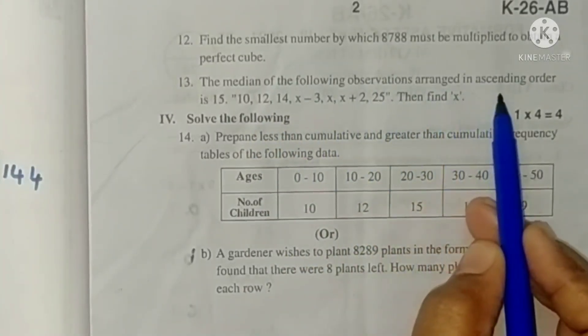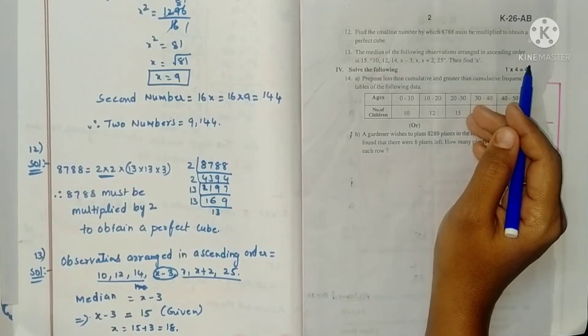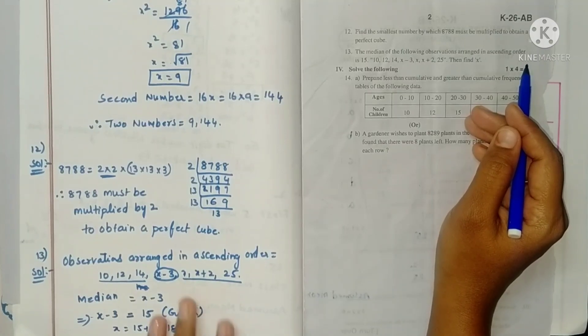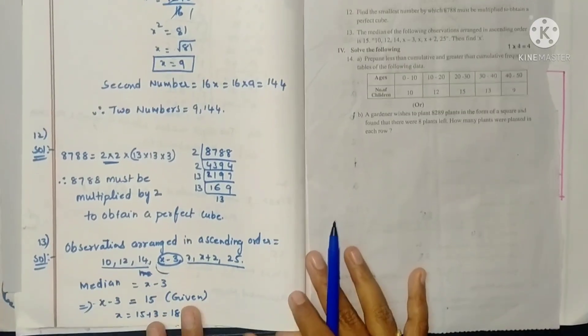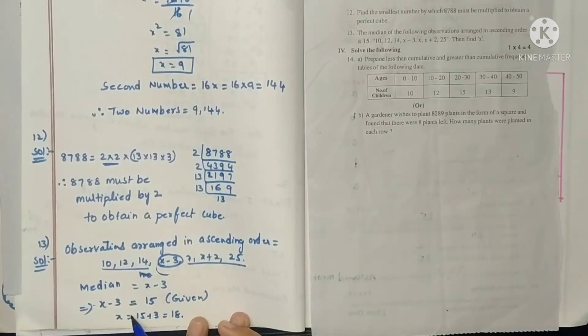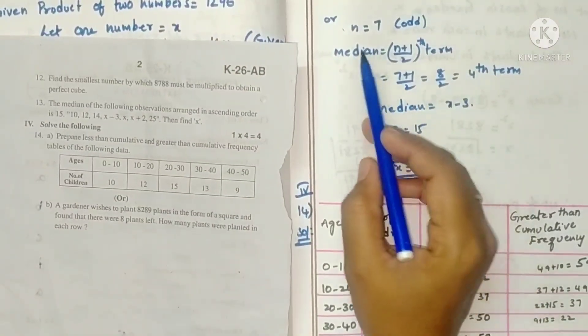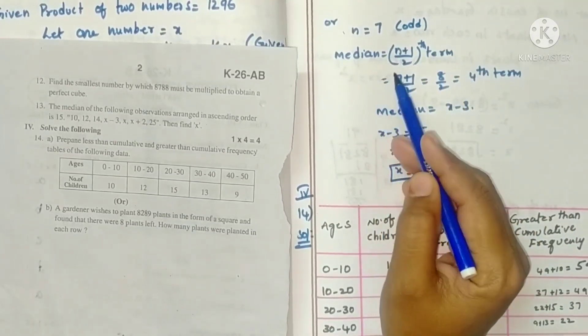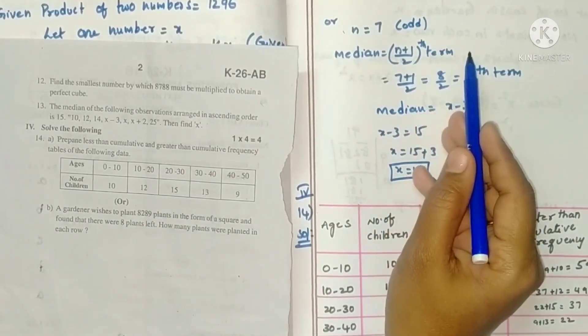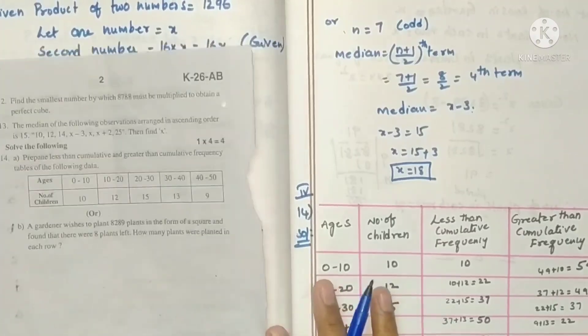The median of the following observations arranged in ascending order is 15. They already gave data in ascending order. This side 3 and this side 3, middle one is the median. According to the problem median is 15. After equalizing X value will be 18. Otherwise by using the formula also you can do. Here number of observations N is 7, so it's odd. If N is odd, what is the formula for median? N plus 1 by 2th term. So this is 4th term X minus 3. Finally X is 18.